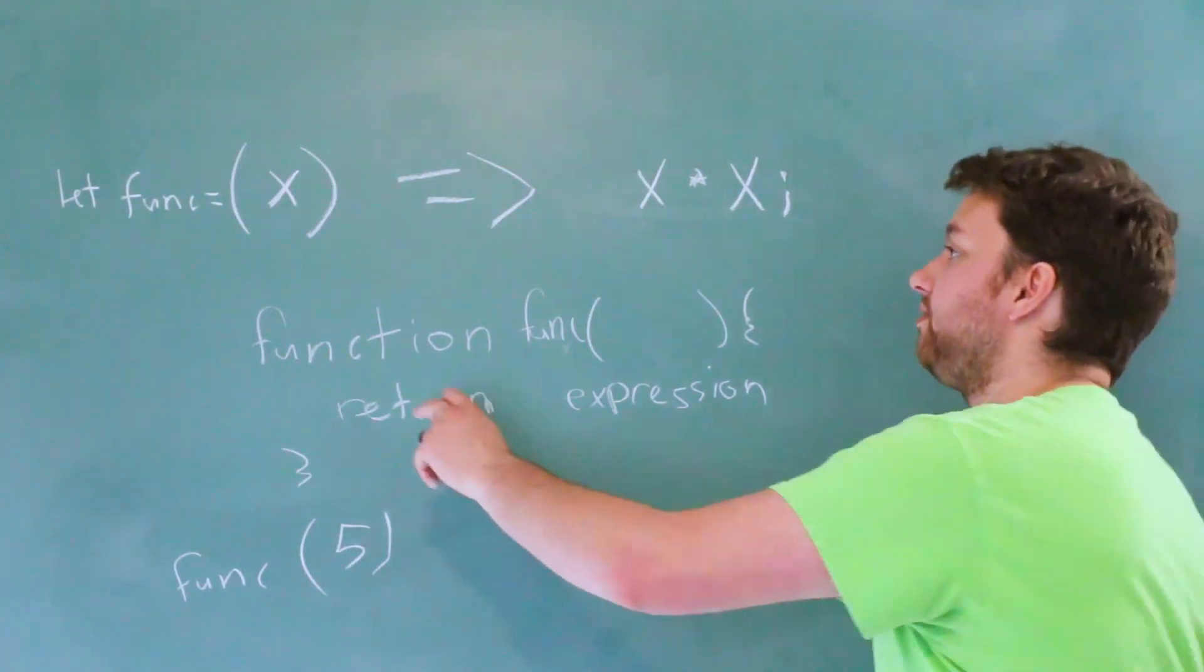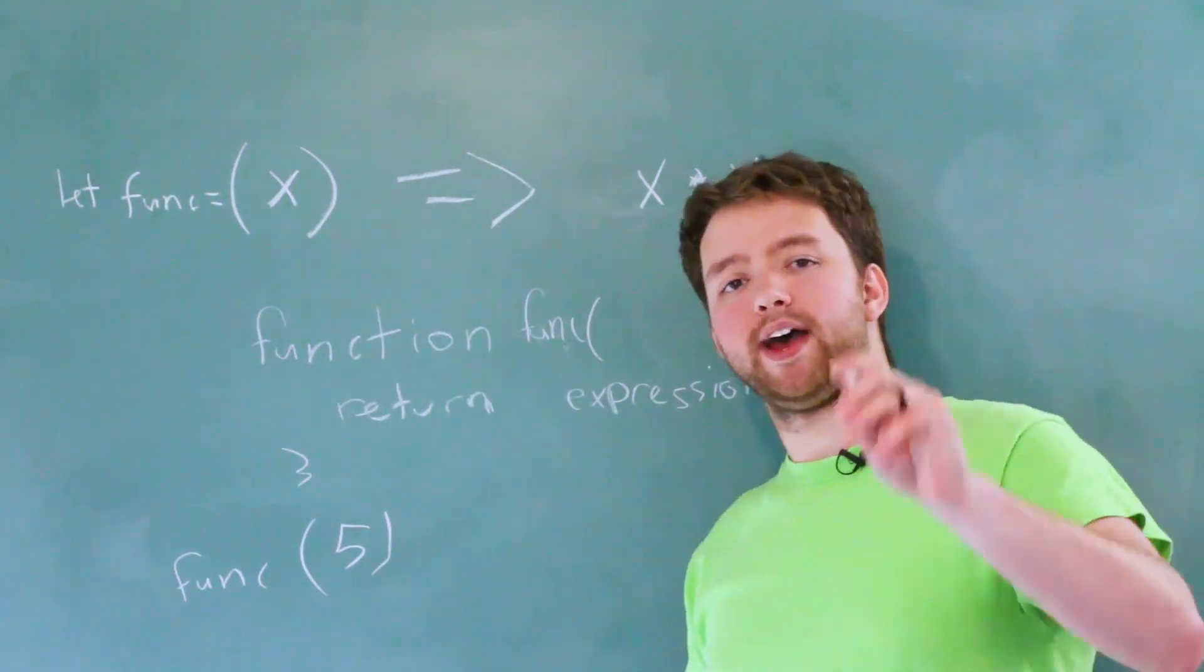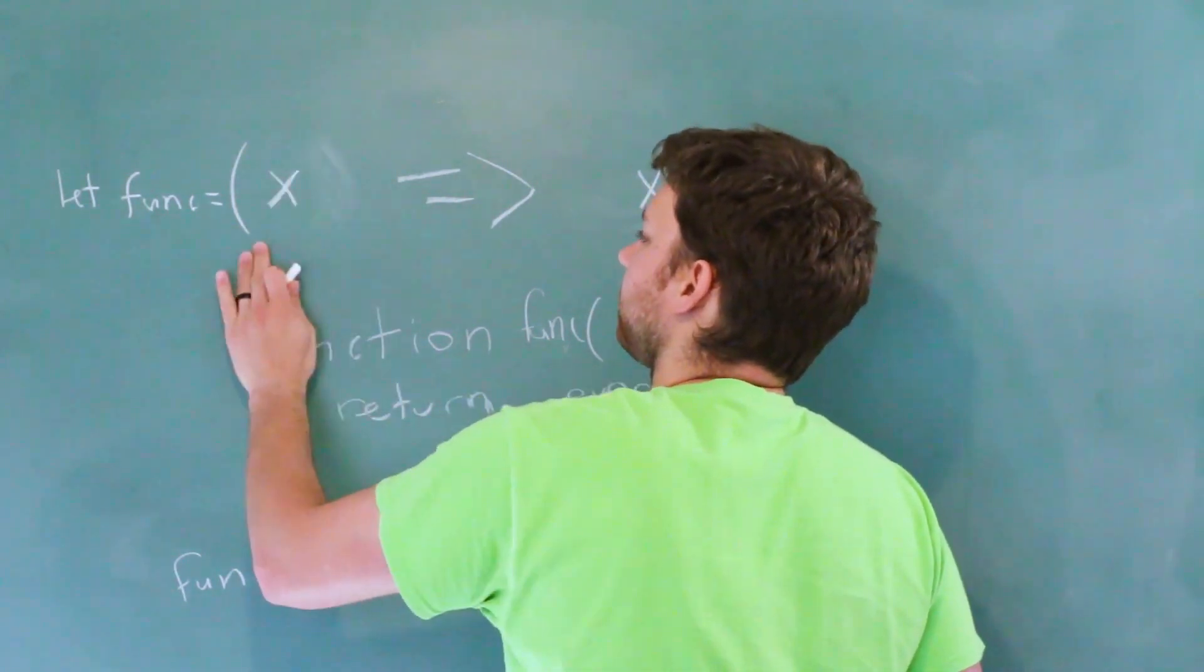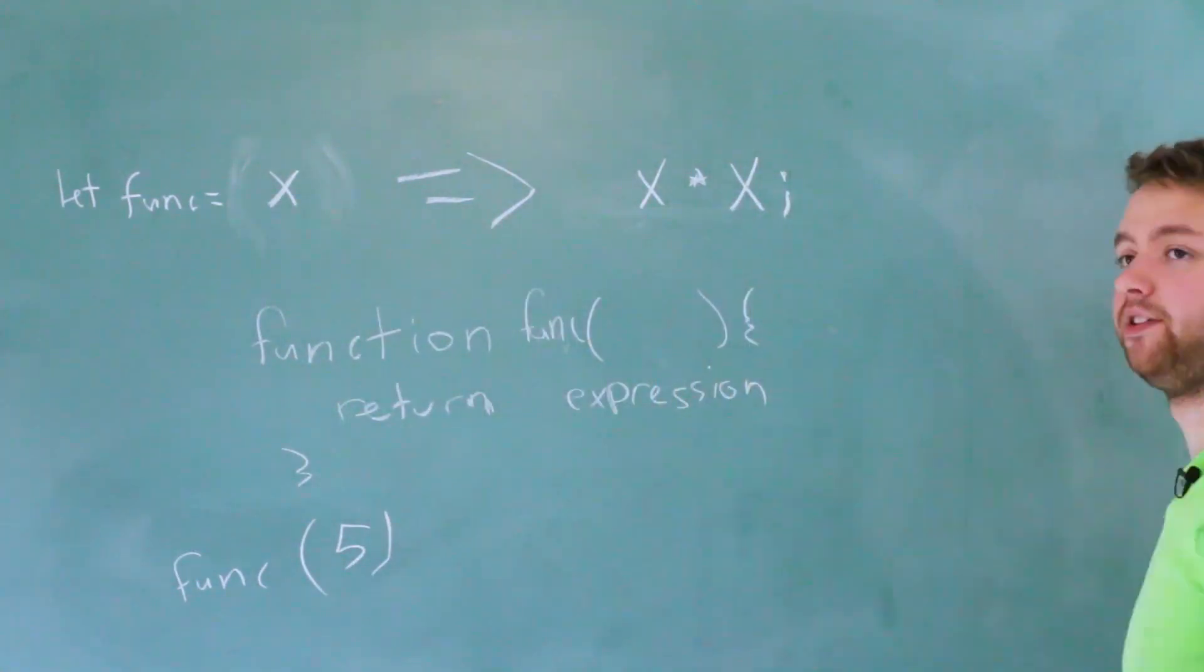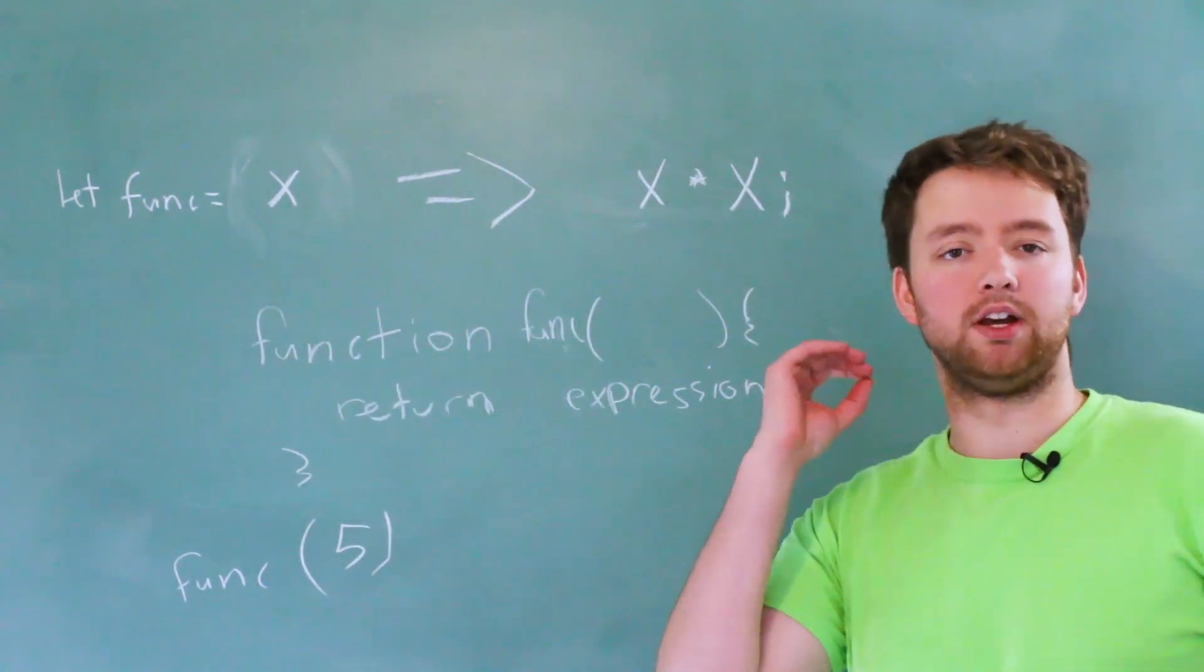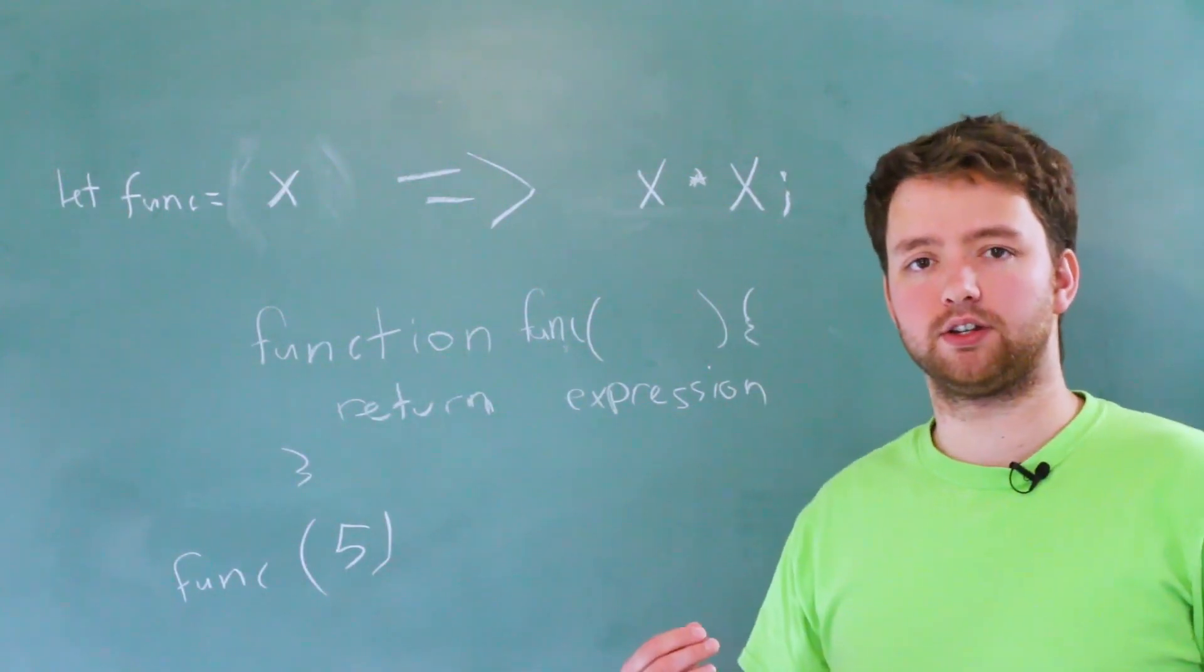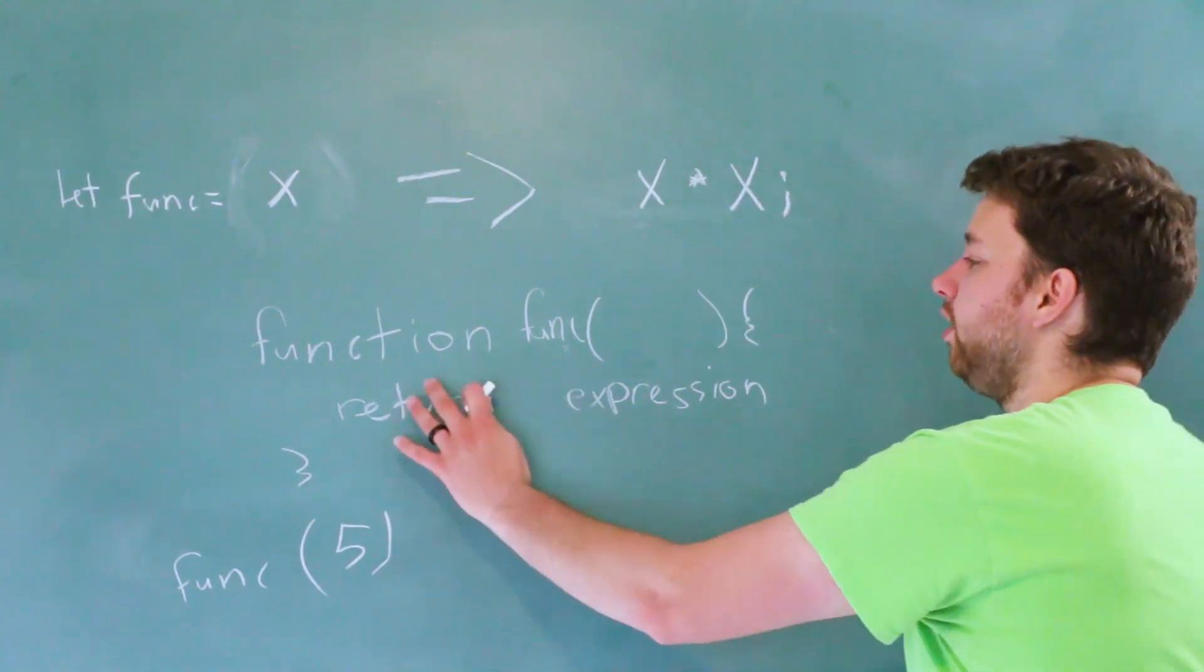All right, so let's talk a little bit more about the syntax. Specifically, these parentheses—they're actually optional when you have one parameter. So we can actually get rid of this, and then all we have is x, fat arrow, x times x. They are required when you have zero or two or more parameters. So if there's one, they're optional.